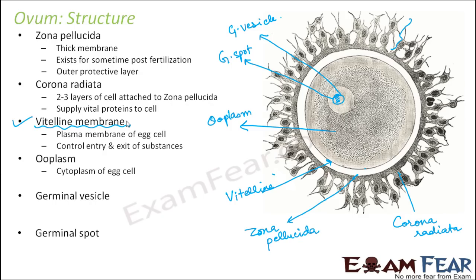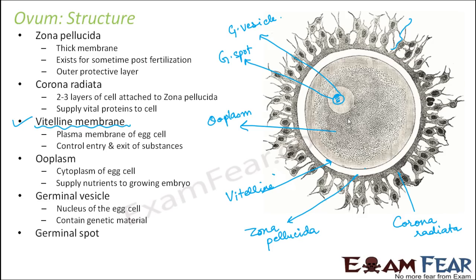Ooplasm is the cytoplasm of the egg cell, and it supplies nutrients to the growing embryo — because once the sperm fertilizes the egg, the fertilized egg develops into a zygote, and the embryo needs nutrients provided by the ooplasm. Germinal vesicle is the nucleus of the egg cell and contains the genetic material, just as the sperm head nucleus does. Germinal spot is the nucleolus — the dense portion inside the nucleus.